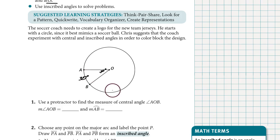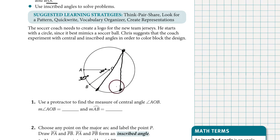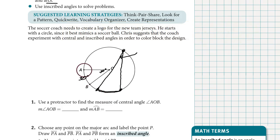Let's talk about another kind of angle that can be created in a circle. This time, we're going to put the vertex of the angle on the circle, not at the center of the circle, and we'll have the sides of the angle be chords in the circle. The sides of that inscribed angle create a minor arc. Notice that this arc is at least the same size as the central angle's arc, maybe even a little bit longer, but this angle looks skinnier than the central angle.